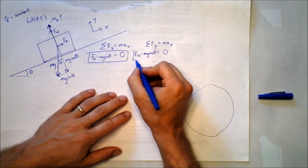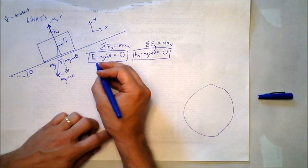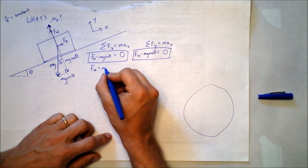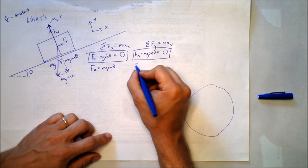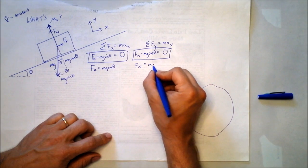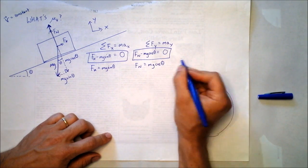So each of these equations is very simple. We just say f sub k is mg sine theta. It's a very exciting game in there. And f sub n is m times g times cosine of theta.